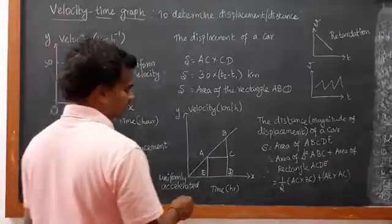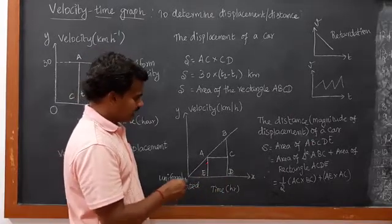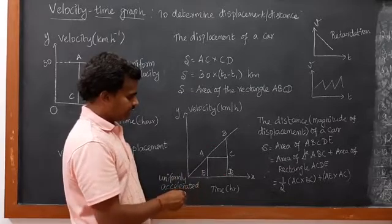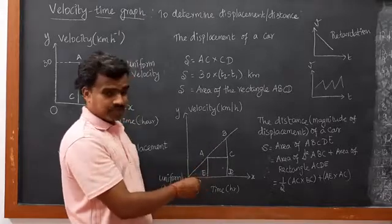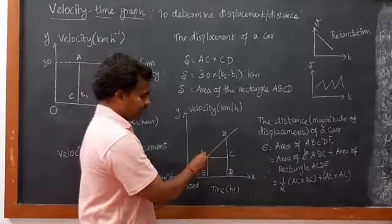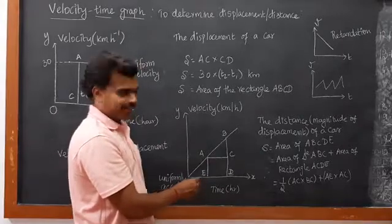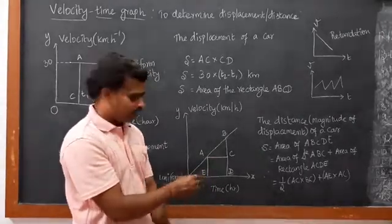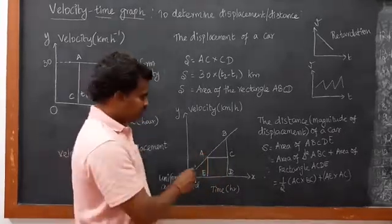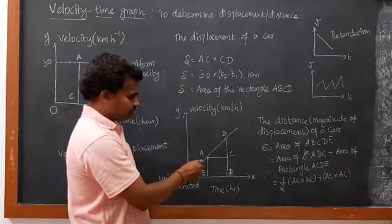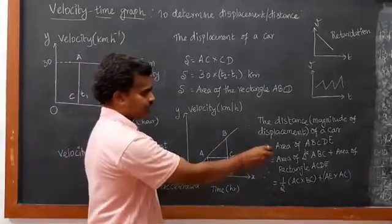So the distance of a car in uniformly accelerated motion — here I have points A, B, C, D, E. The shape of ABCDE is like a trapezium, or we can split it into triangle ABC and rectangle ACDE. The rectangle part is here and the triangle part is here. To find the distance from point A to B of a moving object, distance S is equal to the area of ABCDE.